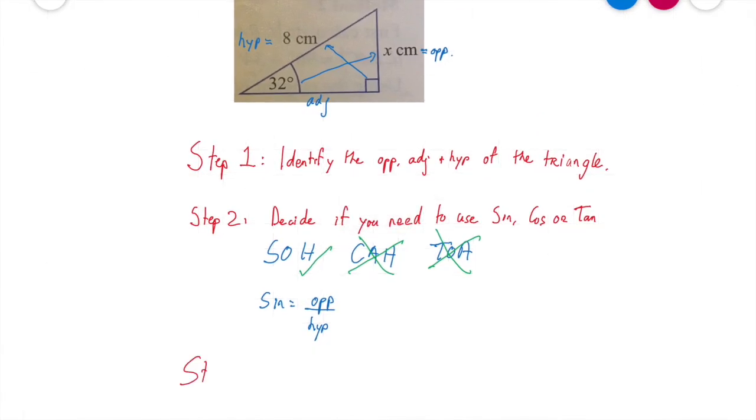Step three, we're going to sub in our values, sub our values into, if I can spell it would be even better, into our chosen ratio. What I mean by ratio is is it sine, cos, or tan.